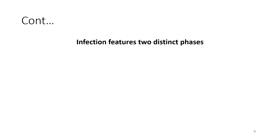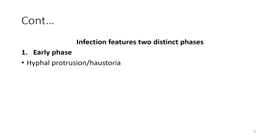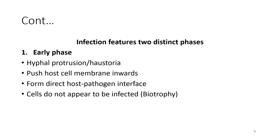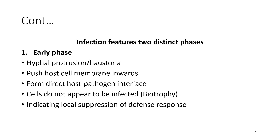Phytophthora capsici is a hemibiotroph. The infection features two distinct phases. It has an early phase and a later phase. The early infection phase has a hyphal protrusion, or haustoria, which pushes the host cell membrane inwards. This helps form a direct host-pathogen interface. During this phase, cells do not appear to be infected, or they are in the biotrophy stage, which indicates local suppression of the defense response of the plant.